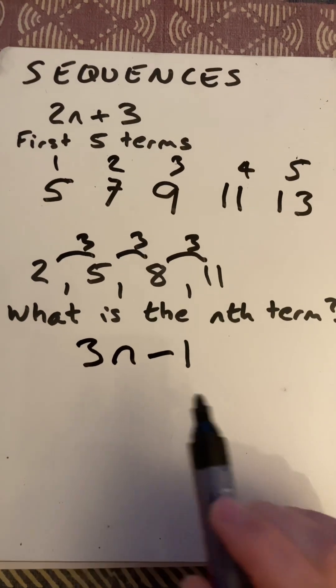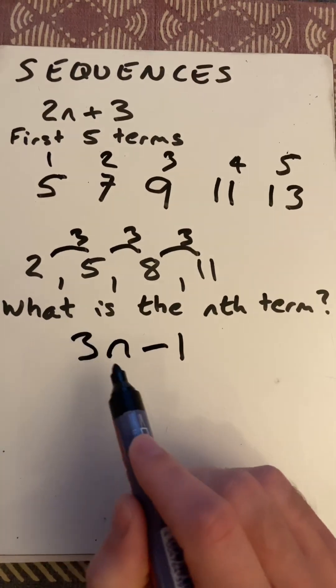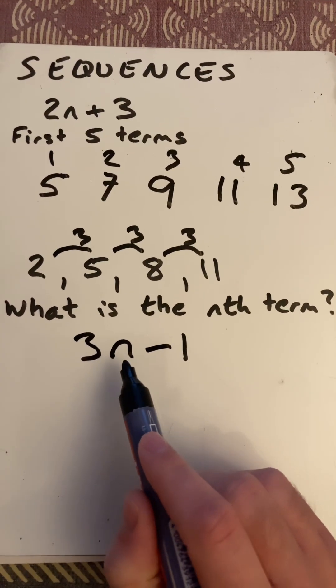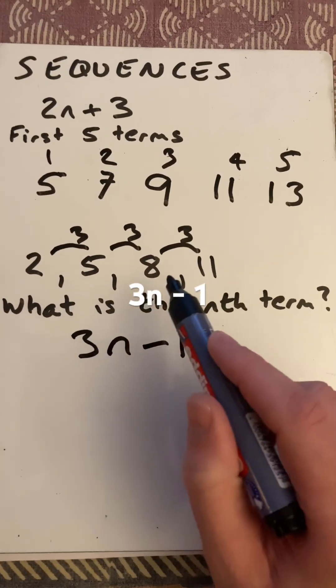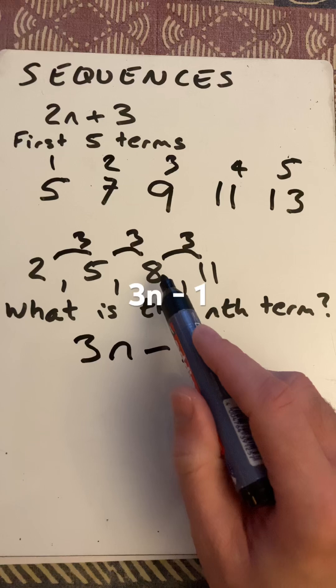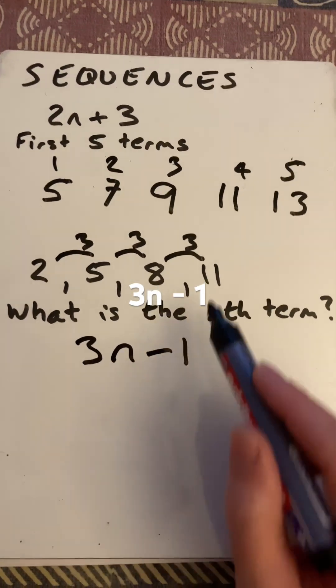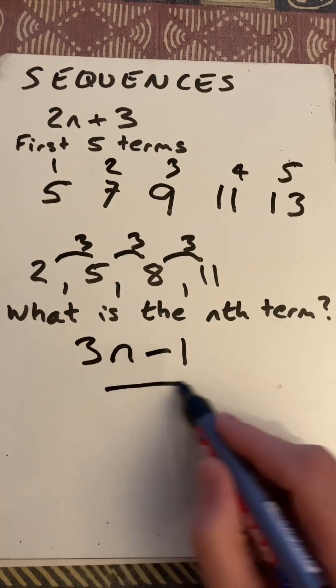And let's check it with one other term. If I put the second term replacing the n with 2, 3 times 2 is 6. Minus 1, I get 5, and so on. 3 times 3 is 9. Minus 1 is 8. 3 times 4 is 12. Minus 1 is 11. So I know that that's correct.